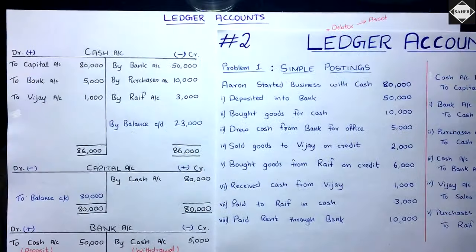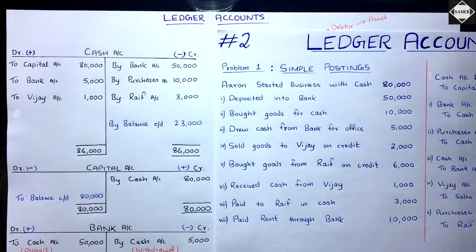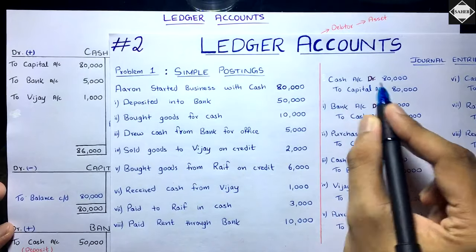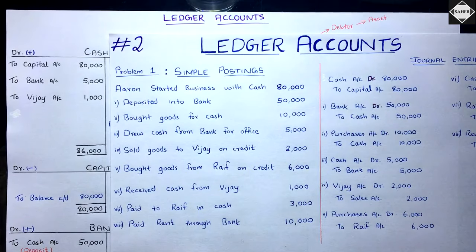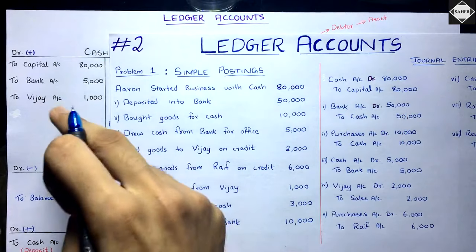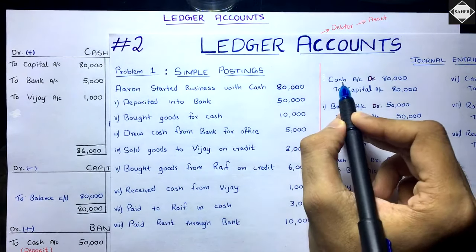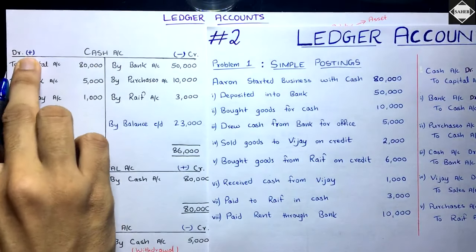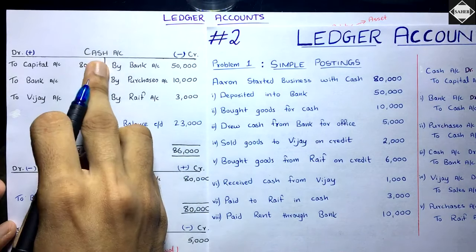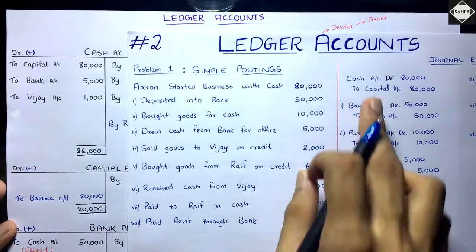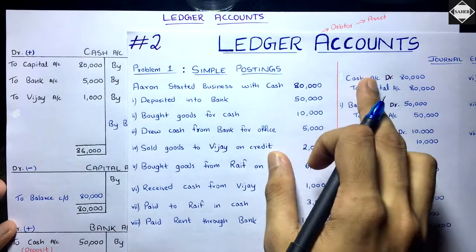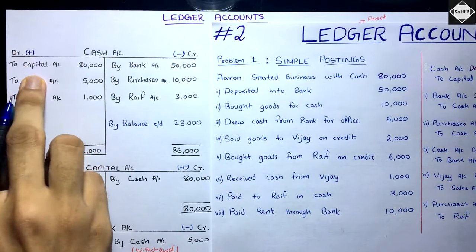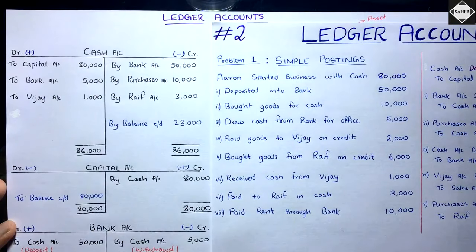I've already prepared the ledger accounts to save time. Starting with the first transaction — Aaron started business with cash 80,000. Journal entry: Cash Account debit, Capital Account credit. For every name taken in the journal entry, we open a respective ledger account. Cash account is an asset with a debit balance — debit means plus, credit means minus. Cash account has been debited because cash is increasing, to Capital Account 80,000.